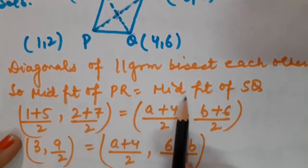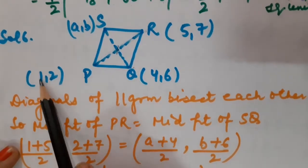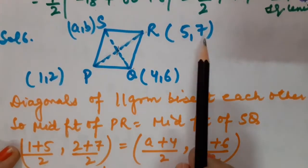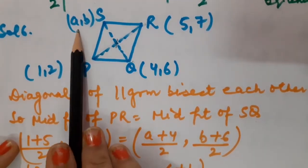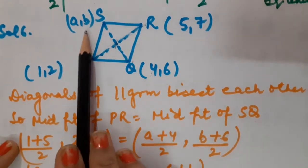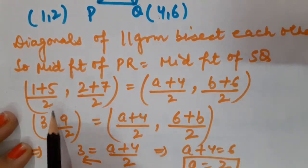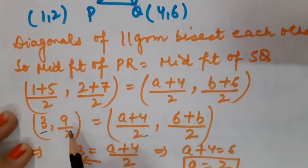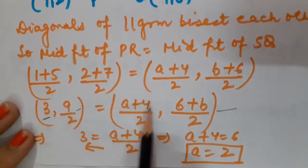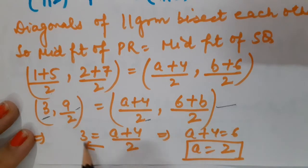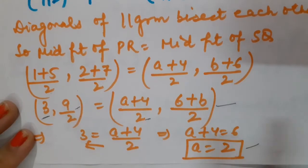Midpoint of PR equals midpoint of SQ. This is (1+5)/2, (2+7)/2 and for SQ: (A+4)/2, (B+6)/2. The abscissa must equal abscissa, ordinate must equal ordinate. So 3 = (A+4)/2, cross multiplying gives A+4=6, therefore A=2.